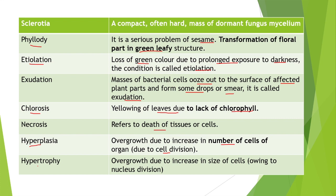Next term is hypertrophy: the overgrowth due to an increase in the size of cells due to nuclear division is known as hypertrophy. When the number of cells increases due to cell division, the condition is hyperplasia; when cell size increases due to nuclear division, the condition is hypertrophy.